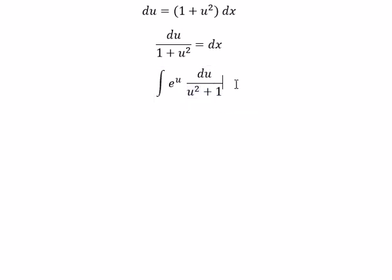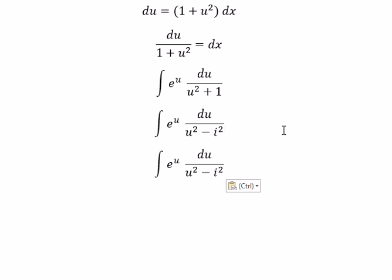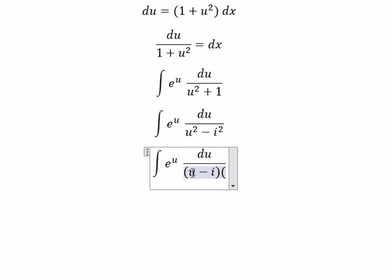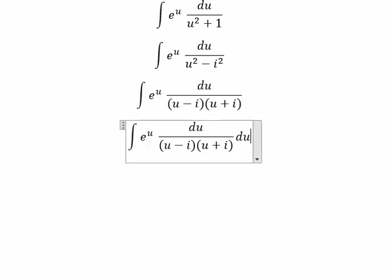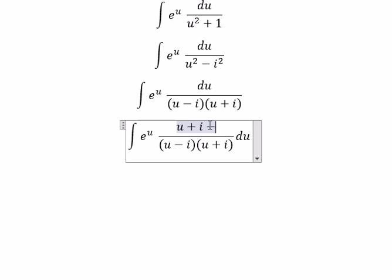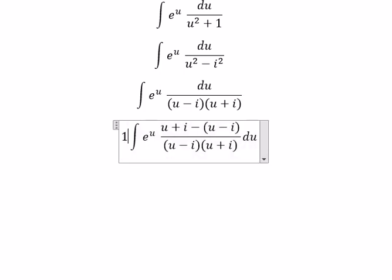We can write 1 plus u squared using negative i squared, where i is the imaginary unit, giving us (u minus i) multiplied by (u plus i). On the numerator, we can write u plus i minus (u minus i), so we have a factor of i and i, and we need to divide by one over 2i.